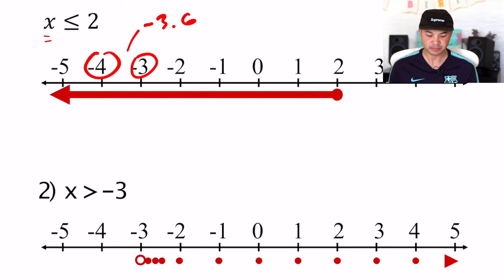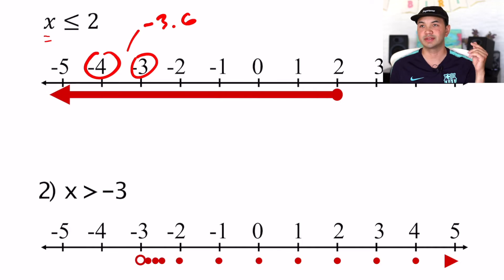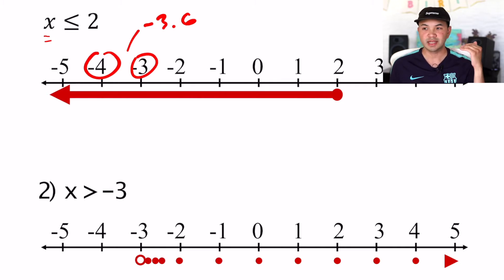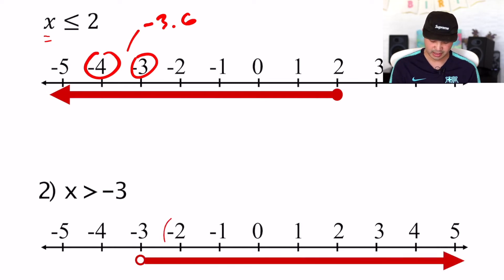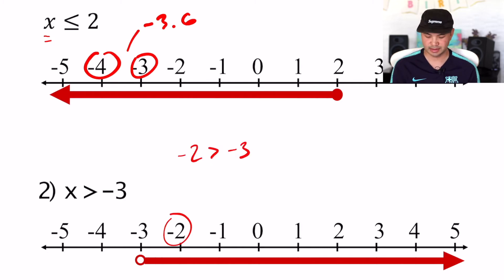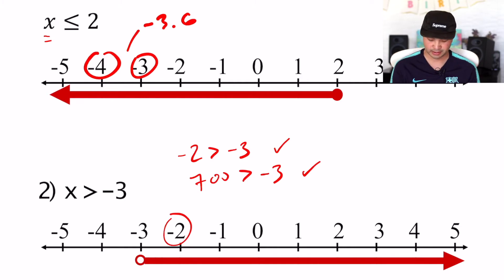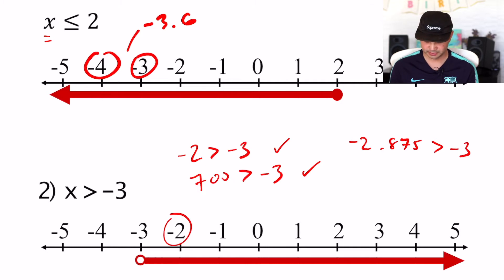That's the difference between graphing a closed circle and an open circle for inequalities. An open circle means it does not include that value. If it's strictly greater than or less than — no line under the symbol — it's an open circle. If there is a line under the symbol, like the one above, it's a closed circle because it includes that number. So negative two is a solution: negative two is greater than negative three — true. Even 700 is greater than negative three — also true. And negative 2.875 is also greater than negative three.